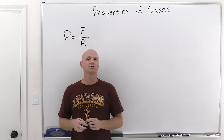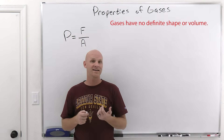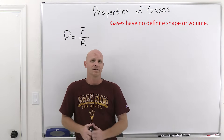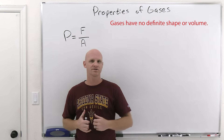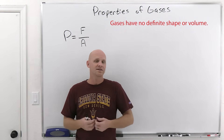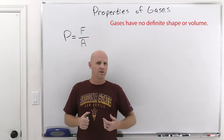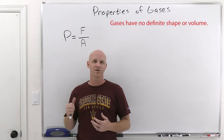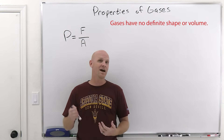We need to distinguish gases from both liquids and solids. A gas does not have a definite shape or volume — it takes on the shape and volume of whatever container you put it in. A liquid takes on the shape of the container but won't expand to fill it, so a liquid has a definite volume but not a definite shape. A solid has both definite shape and definite volume. So: gases — no definite shape and no definite volume; liquids — definite volume but no definite shape; solids — definite volume and definite shape.